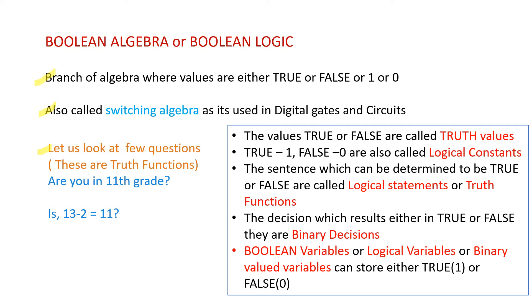Are you in 11th grade? The answer for this will be either true or false, or yes or no. And the next question: is 13 minus 2 equal to 11? The answer for this is yes, or we can say it is true. So the values true or false are called truth values, and we can say that true equals 1 and false equals 0 — these are also called logical constants.